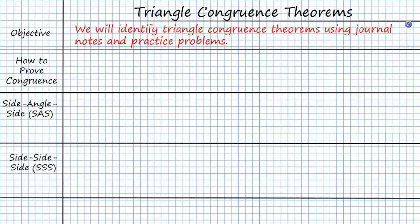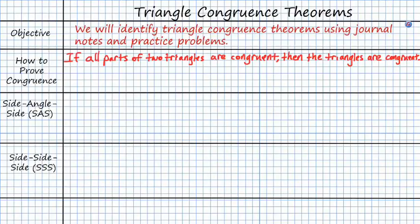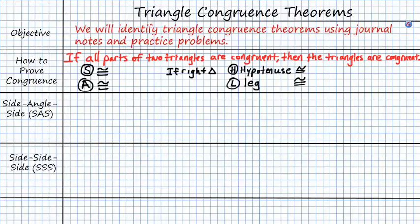First off, let's talk about how to prove congruence. We have a special theorem that states something extremely obvious: if all parts of two triangles are congruent, then the triangles themselves will be congruent. So let's talk about the different parts — we can talk about sides being congruent, angles being congruent, and for a right triangle, the hypotenuse and the leg being congruent. These are the major objects we're looking at when looking for congruence.